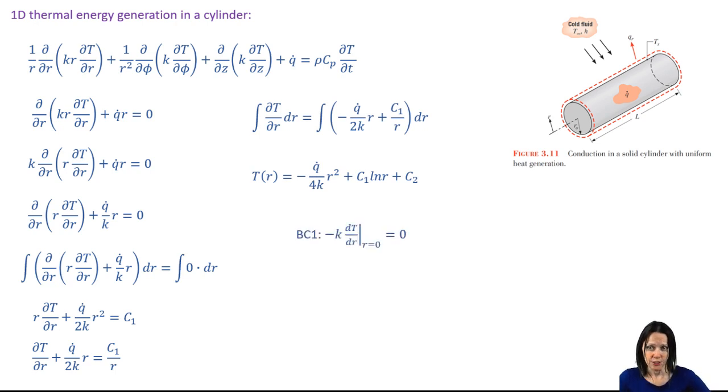The first boundary condition is the symmetry condition. And the second can be either a prescribed surface temperature or a flux. We could go through the same process as before to solve for those constants of integration, which will depend, of course, on the other boundary condition. But we'll save that for some problems that we go over in class.